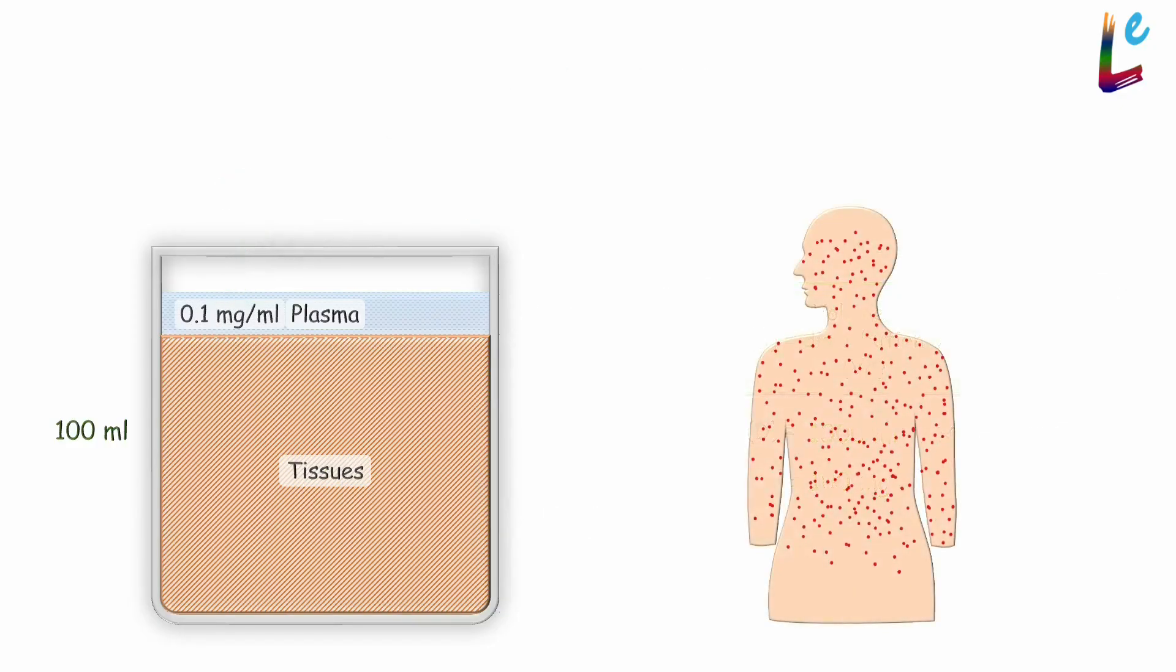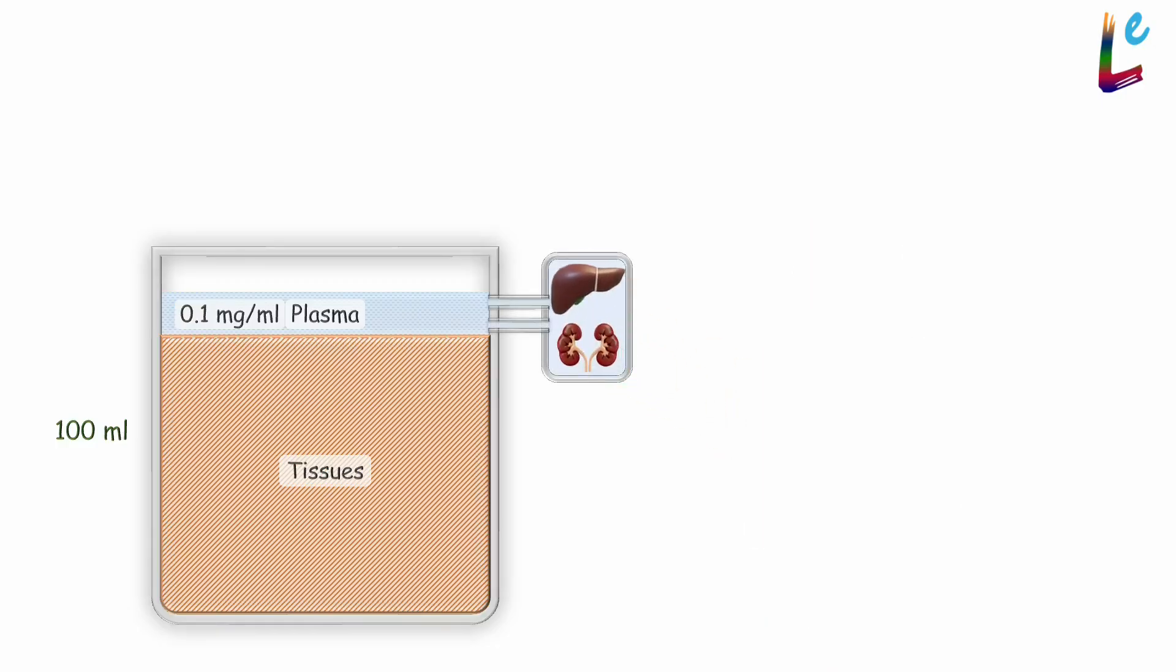But in the body, the organs of elimination will eliminate the drug from the plasma. So let's add an eliminator box to represent this. Now as the drug is being eliminated, we have to add additional amounts of drug to maintain the plasma concentration. This is the maintenance dose.